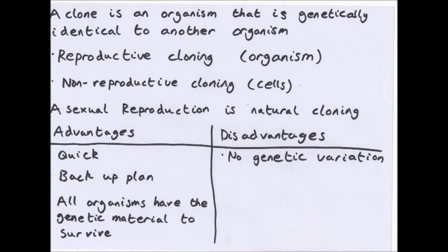The advantages of asexual reproduction: it is quick, allowing an organism to reproduce rapidly and take advantage of resources in the environment. If there is a sudden surge of resources, you can very quickly asexually reproduce and collect all those resources. Equally, if you're having a problem, you can quickly asexually reproduce to move plants away from a problematic area.